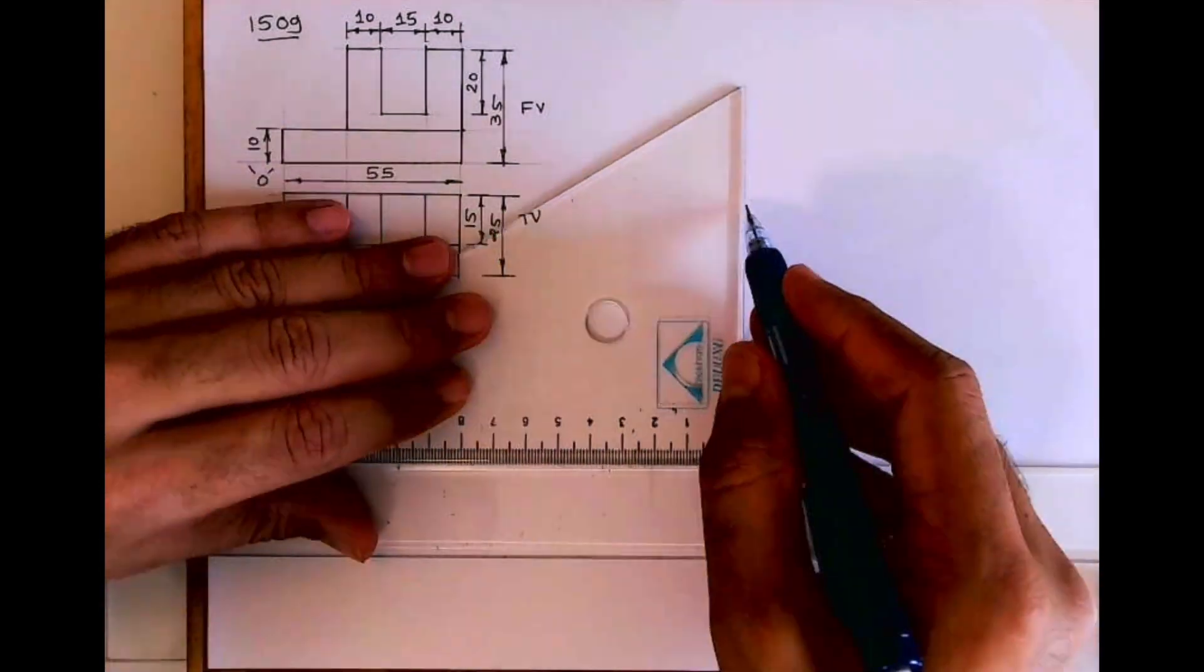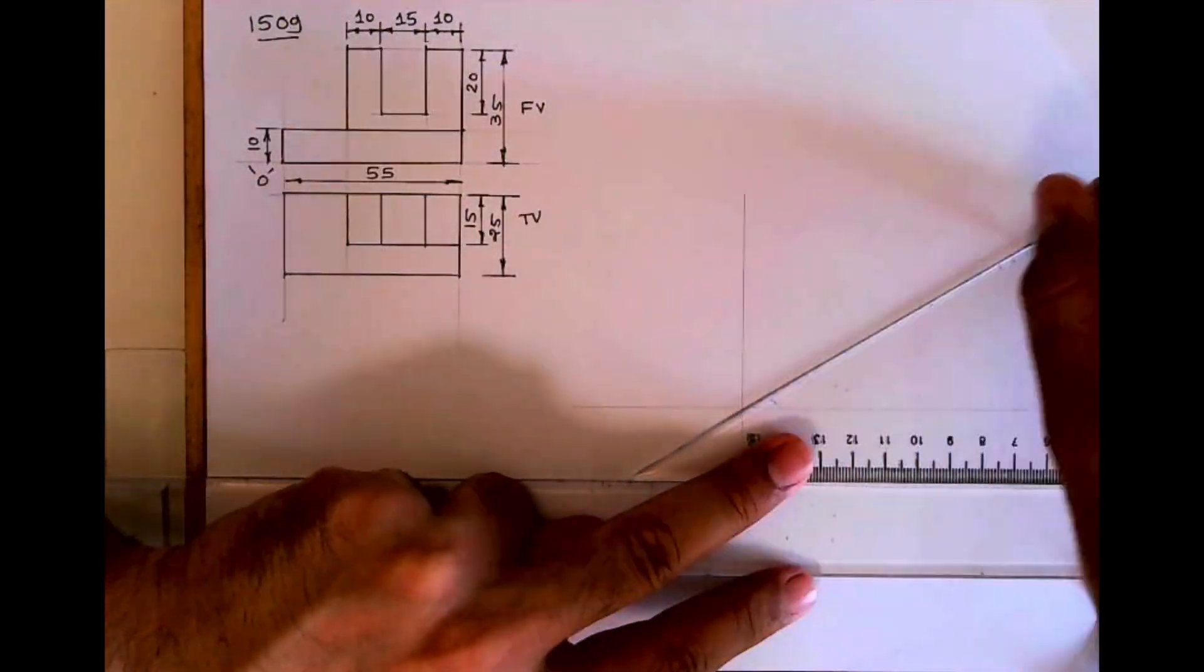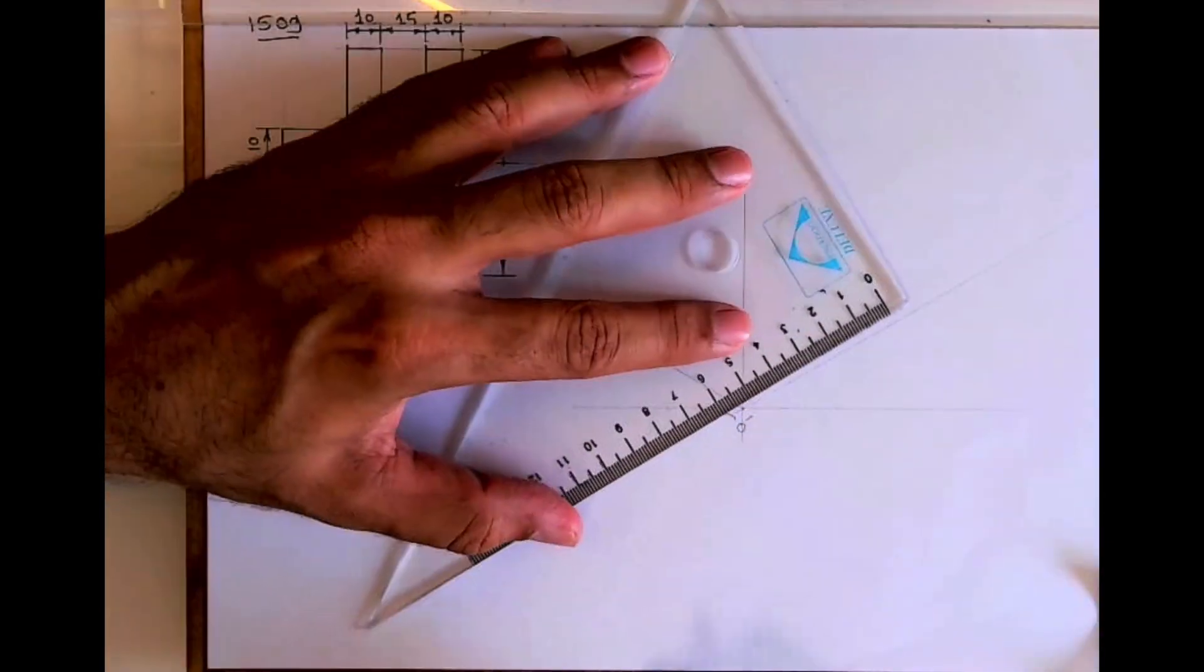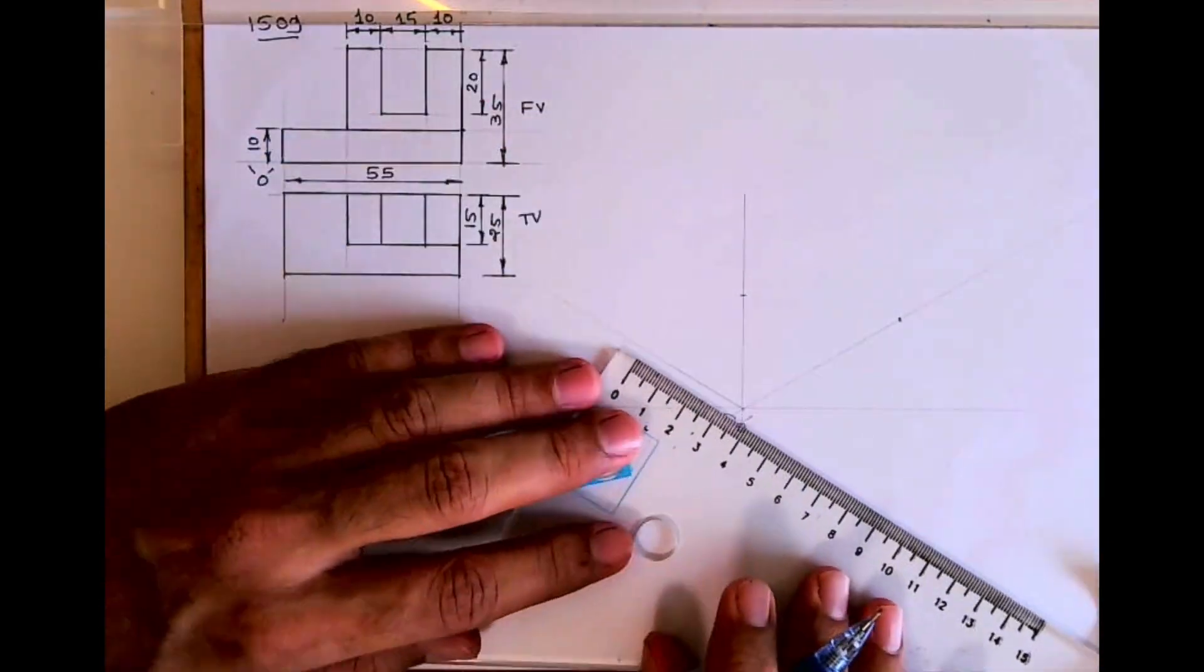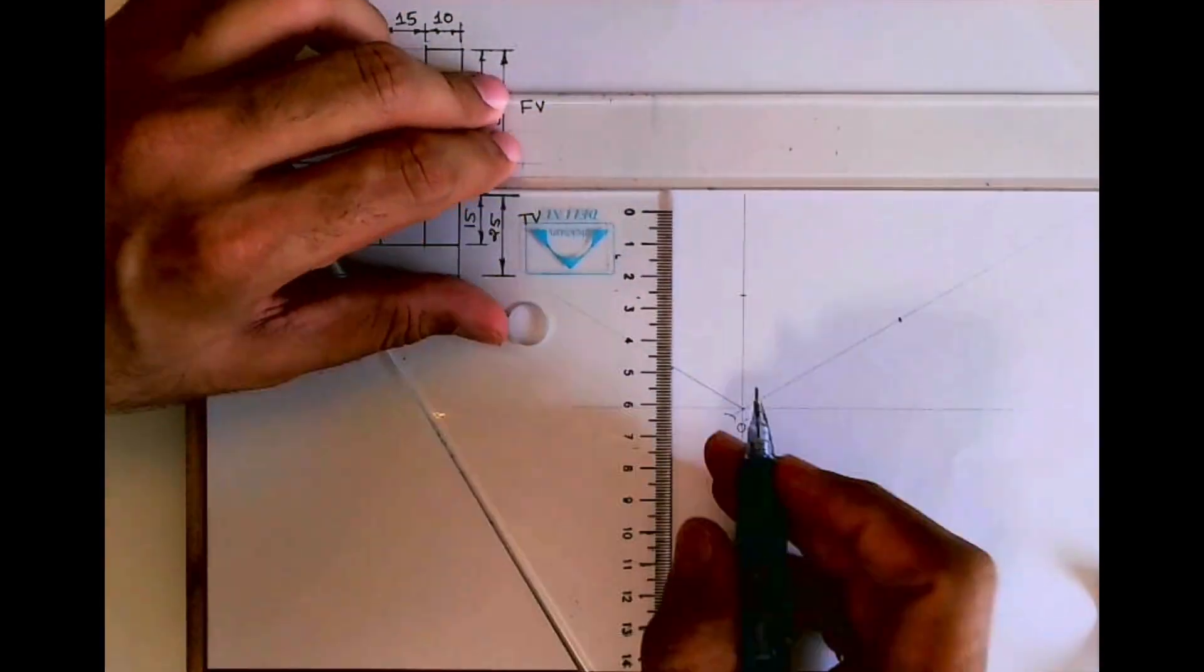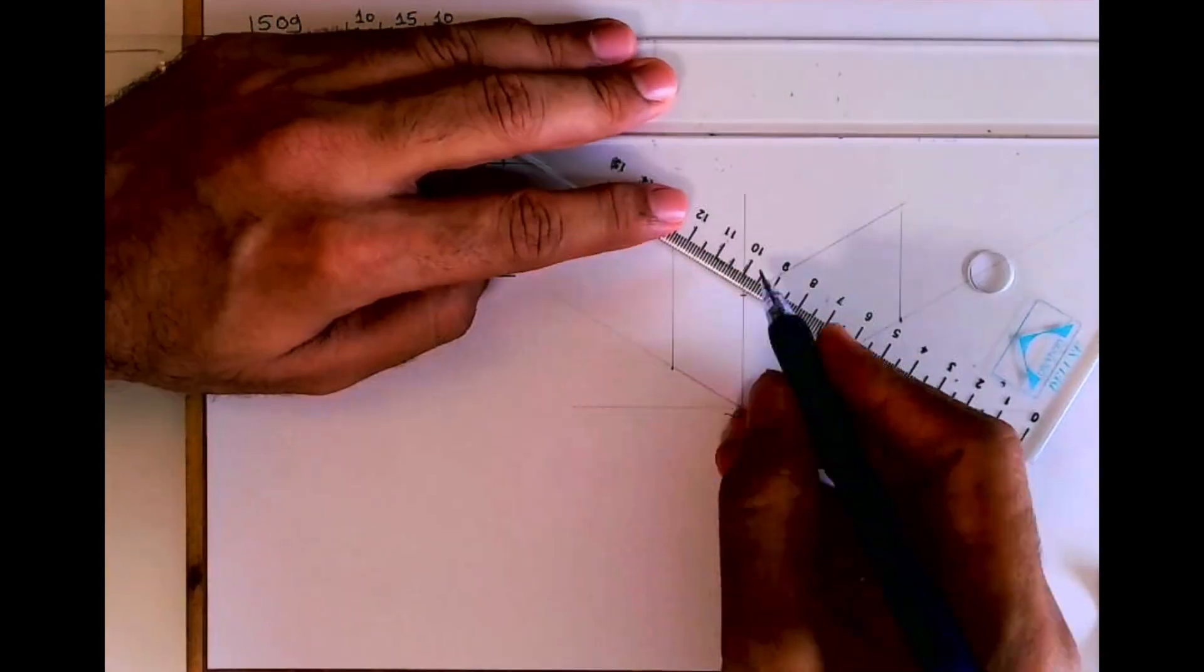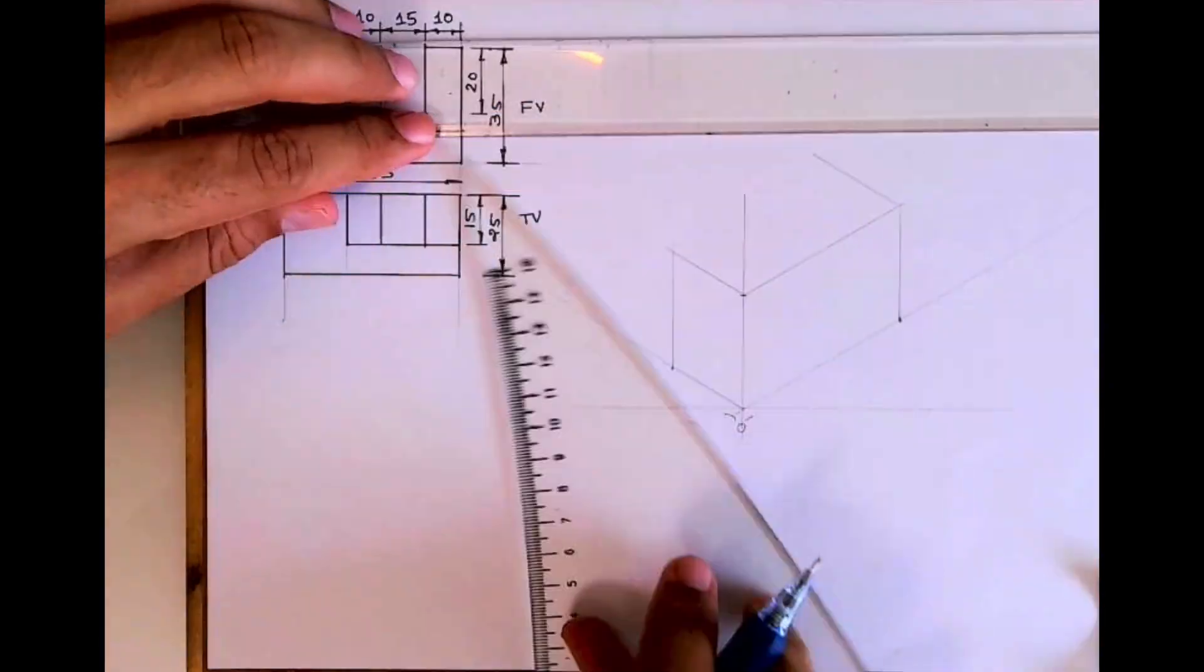Welcome to technical drawing. Today we'll see this sum. First we will draw layout. If you see, length is 55, so on right side I'll take 55. Height I will take 35, and width I will take 25. I will draw box like this.